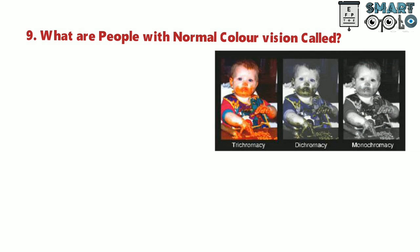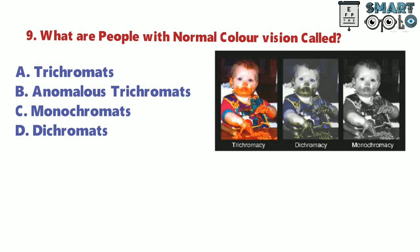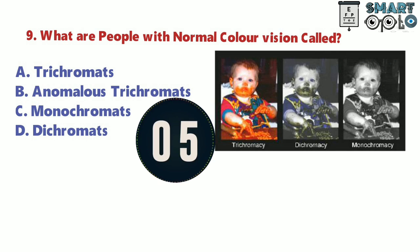Question 9. What are people with normal color vision called? A. Trichromats. B. Anomalous trichromats. C. Monochromats. D. Tichromats.